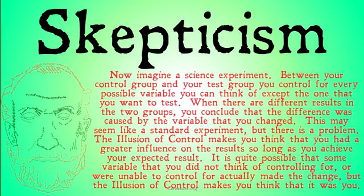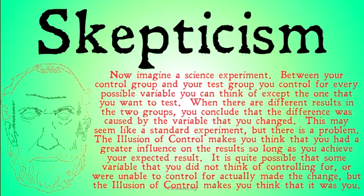Now imagine a science experiment. Between your control group and your test group, you control for every possible variable you can think of, except the one that you want to test. When there are different results in the two groups, you conclude that the difference was caused by the variable that you changed. This may seem like a standard experiment where you're justified in your conclusion, but there's a problem. The illusion of control makes you think that you had a greater influence on the results so long as you achieve your expected result. If you had not achieved the expected result, you might have concluded that perhaps there was a variable that we didn't control for. But if you did achieve the expected result, your conclusion is more likely to be that what you changed was the thing that had an effect, not that there was some variable you didn't think to control for that affected the test. It's quite possible that some variable you did not think of controlling for actually made the change, but the illusion of control makes you think that it was you.